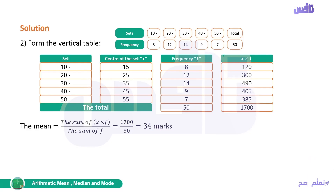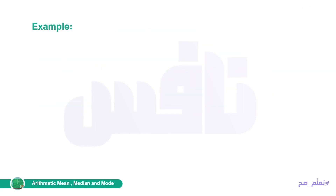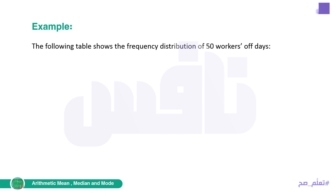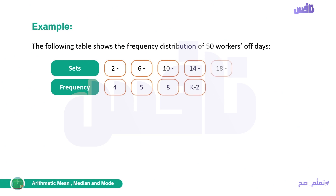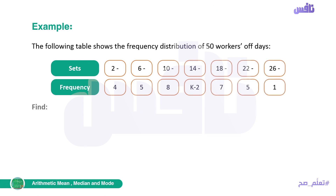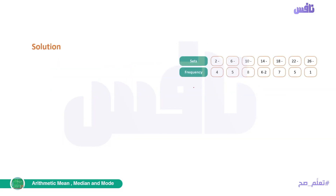The mean is the most important measure and comes up most in exams. Its method is very simple. Another example on the mean: the following table shows the frequency distribution of fifty workers by days. The required asks us to find: (a) the value of K, because the table has a K in it; and (b) the arithmetic mean for that distribution. We have a total of fifty, since there are fifty workers.